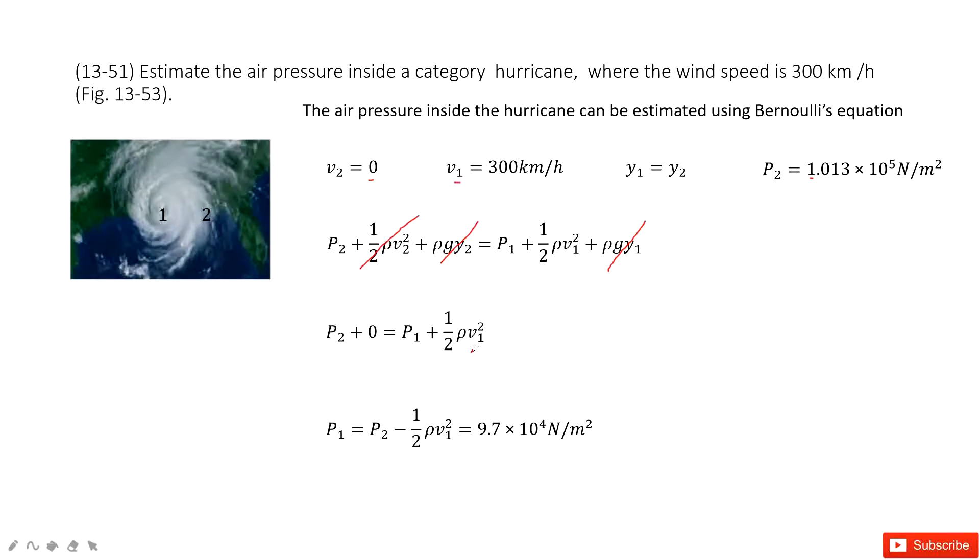Now we can get the pressure P1. We use P2 minus one half rho V1 squared in this equation and input the P2 and rho V1 inside. We get the final answer right there. Thank you.